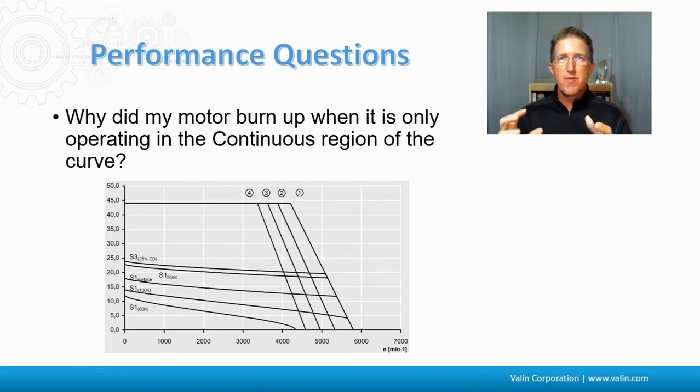So usually the primary protection for the motor is the drive, calculating that temperature increase. The problem is when the operator resets the drive to recover from the fault, that drive then starts back over at its original assumption of what the ambient temperature is. You know, 20 degrees C, room temperature, for example, maybe 30 degrees Celsius.